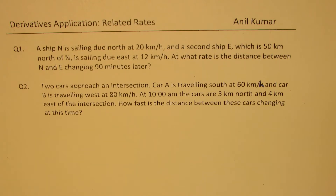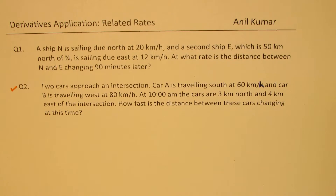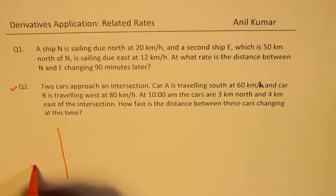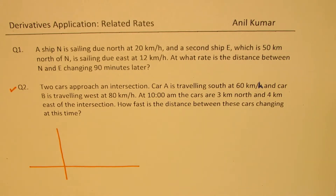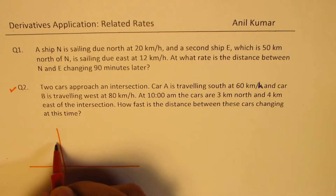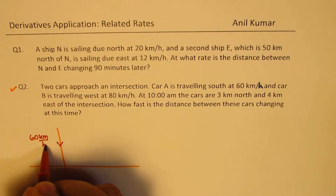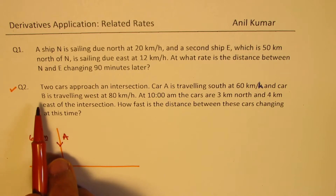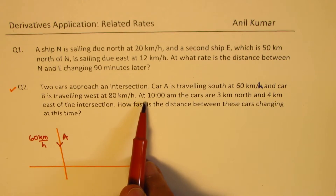Question two is relatively simple and will help us understand the concept, so we'll begin with its solution. There are two cars approaching an intersection. Let's say that is the intersection. Car A is traveling south at 60 kilometers per hour, and car B is traveling west at 80 kilometers per hour.